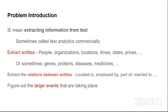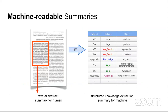Under the umbrella of information extraction there are many sub-problems: essay grading, noun compound interpretation (e.g., 'apple pie' means a pie made of apple — that relationship is implicit), and finding larger events such as a disease outbreak when many people tweet about health problems in a particular location.